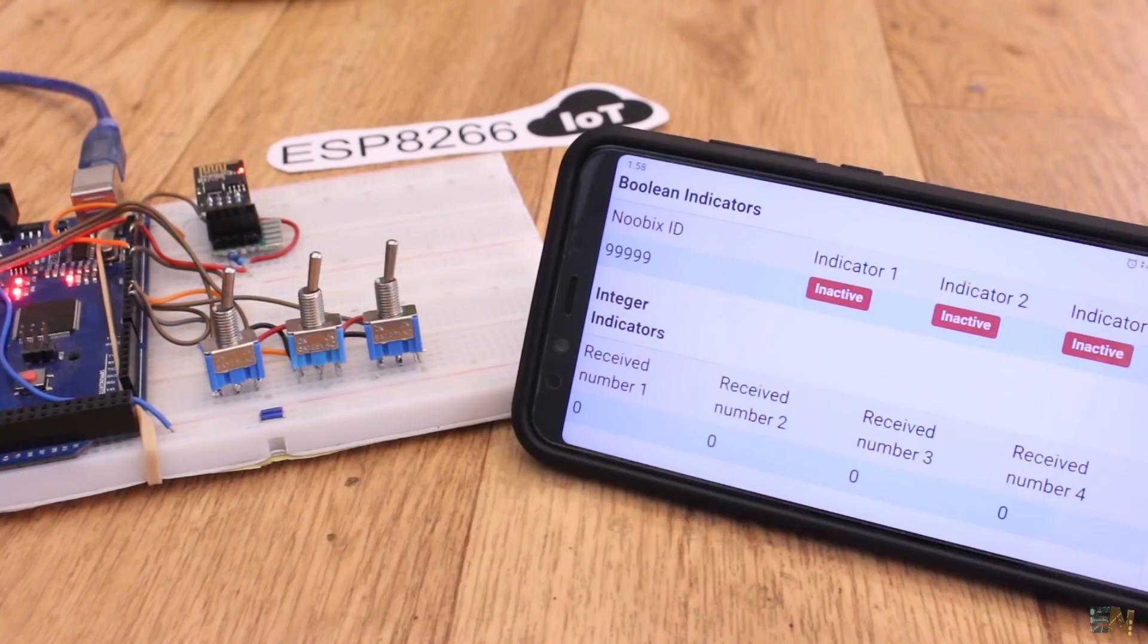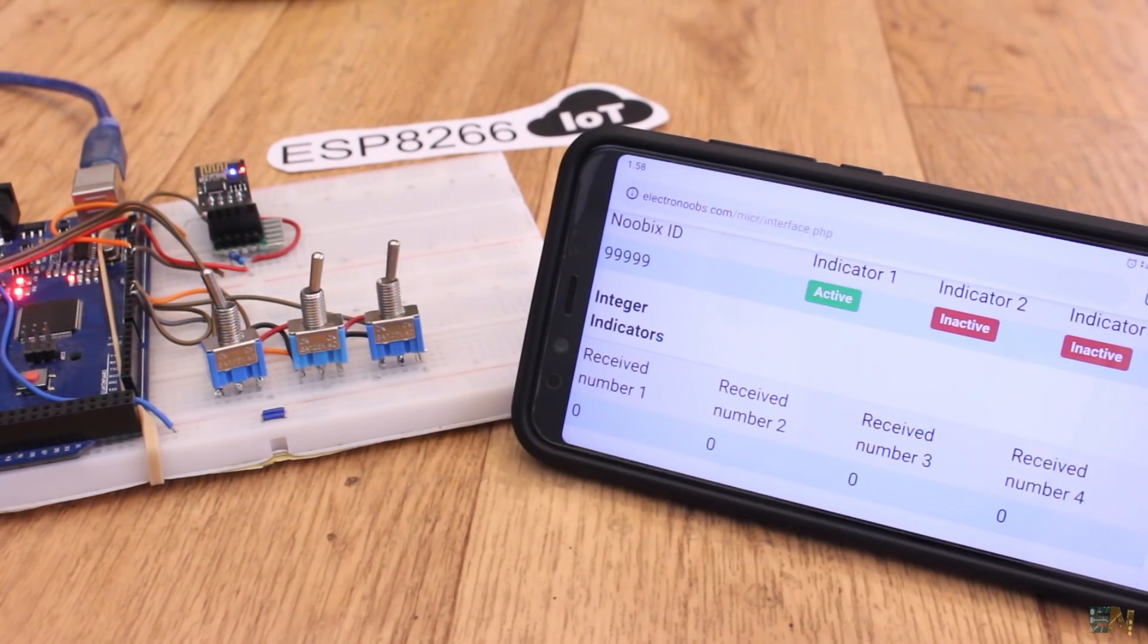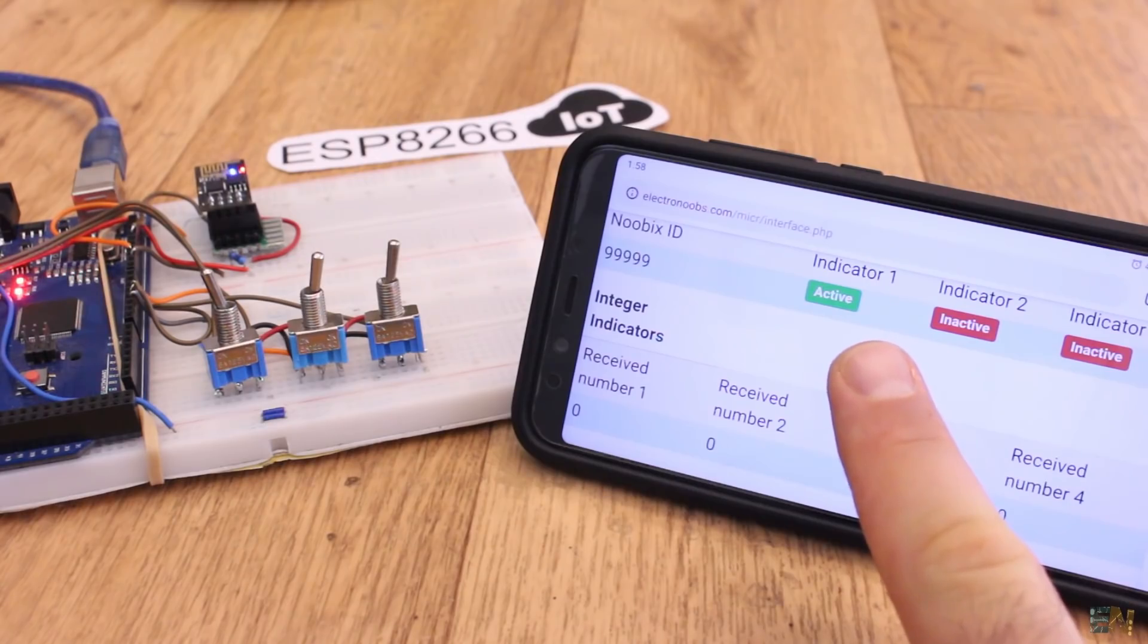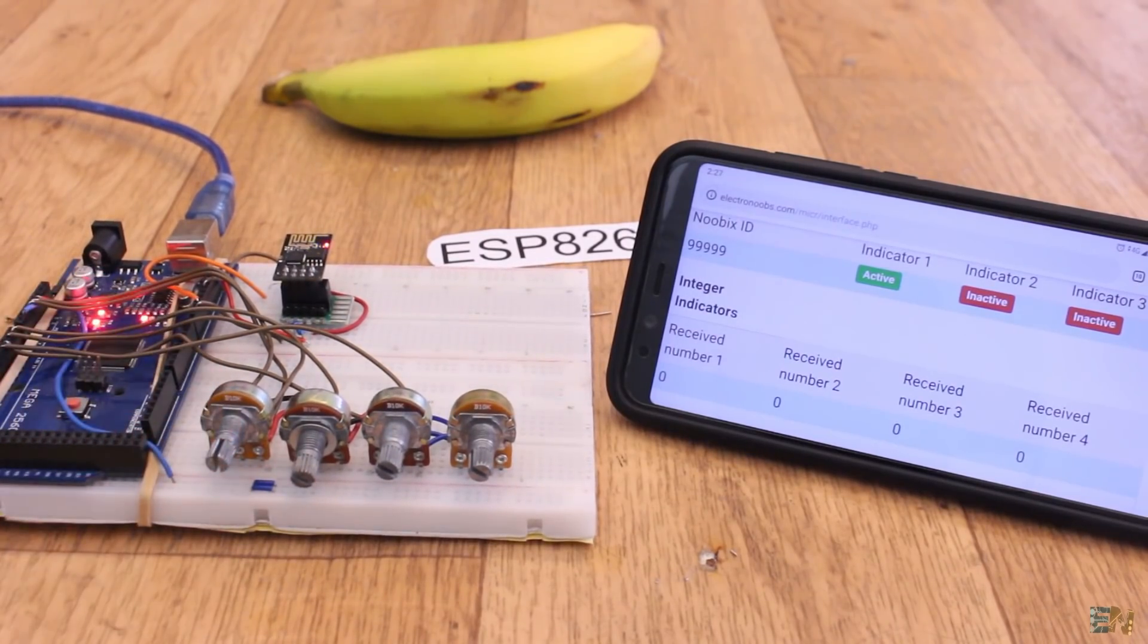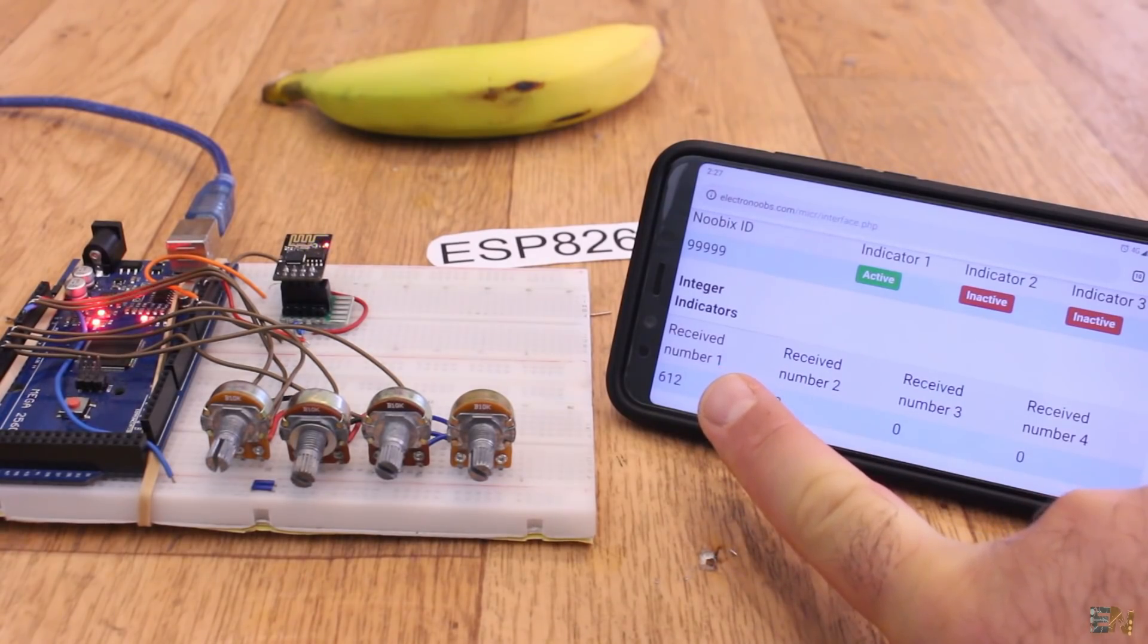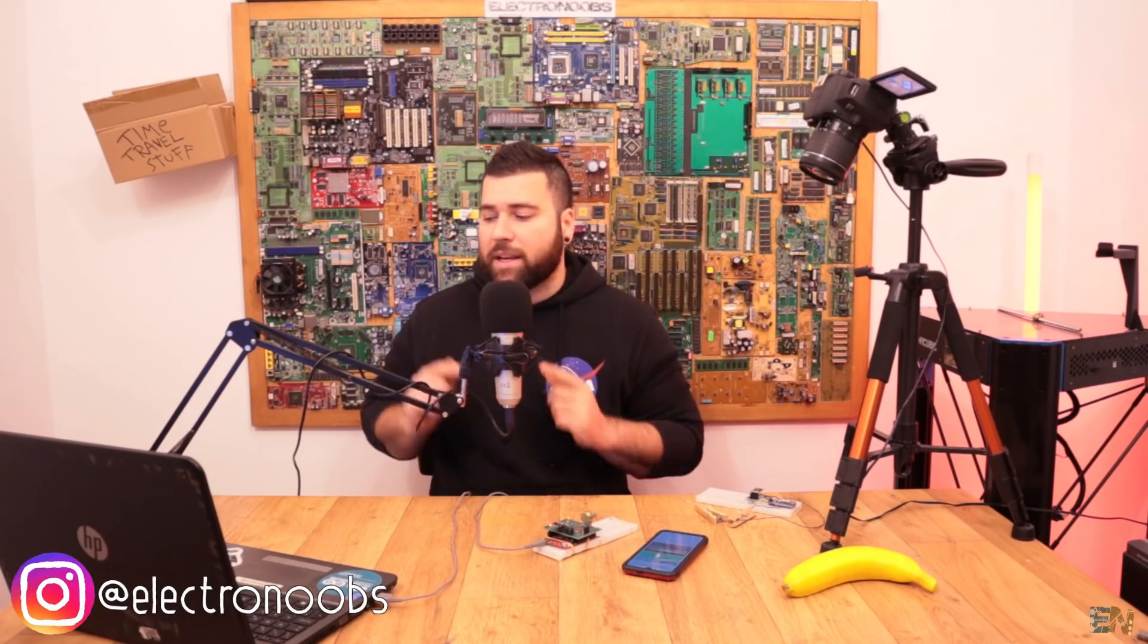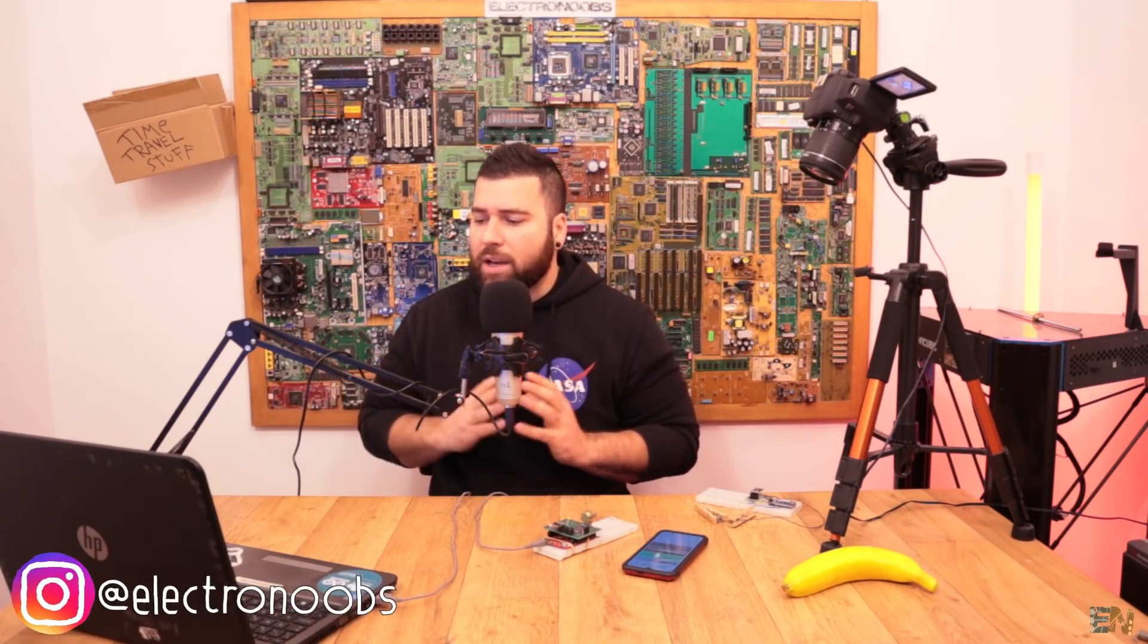But that video was very complicated because in the same tutorial we were sending four different sensor analog values, four different boolean values, one full text of 100 characters, and receiving three boolean values. That made the code very difficult to understand. So I've decided to make smaller examples and create a series of videos about IoT with the ESP8266.